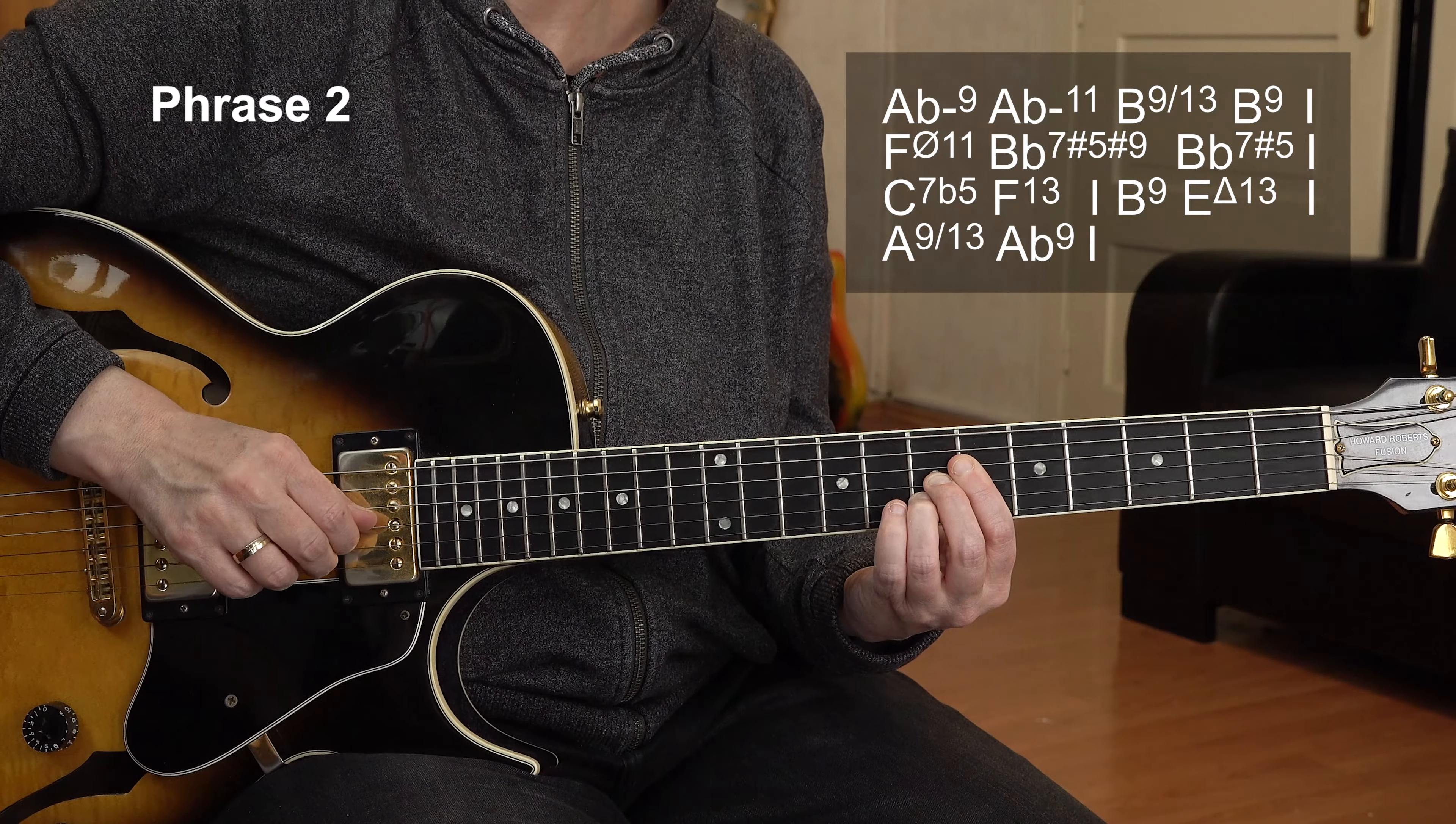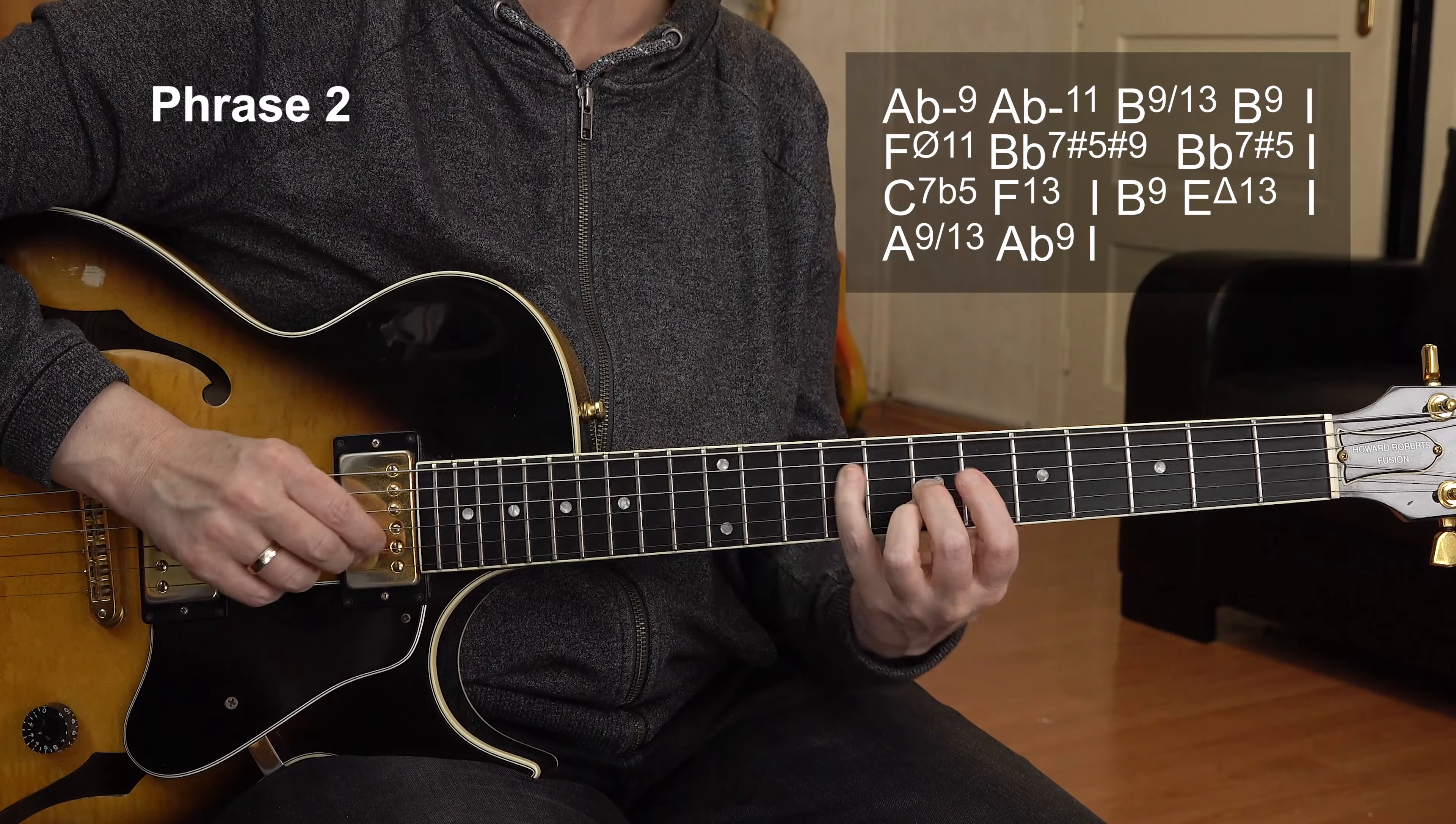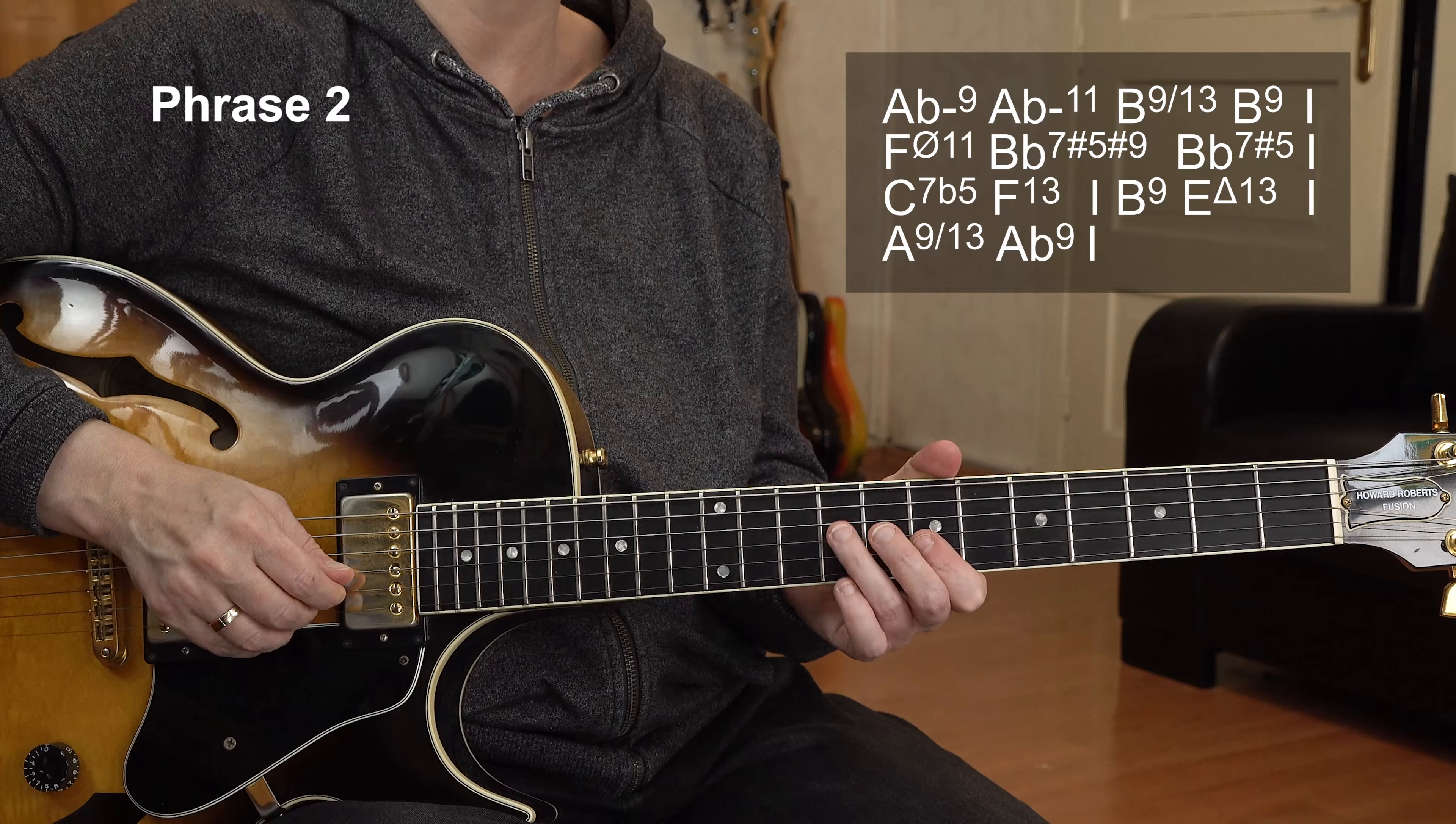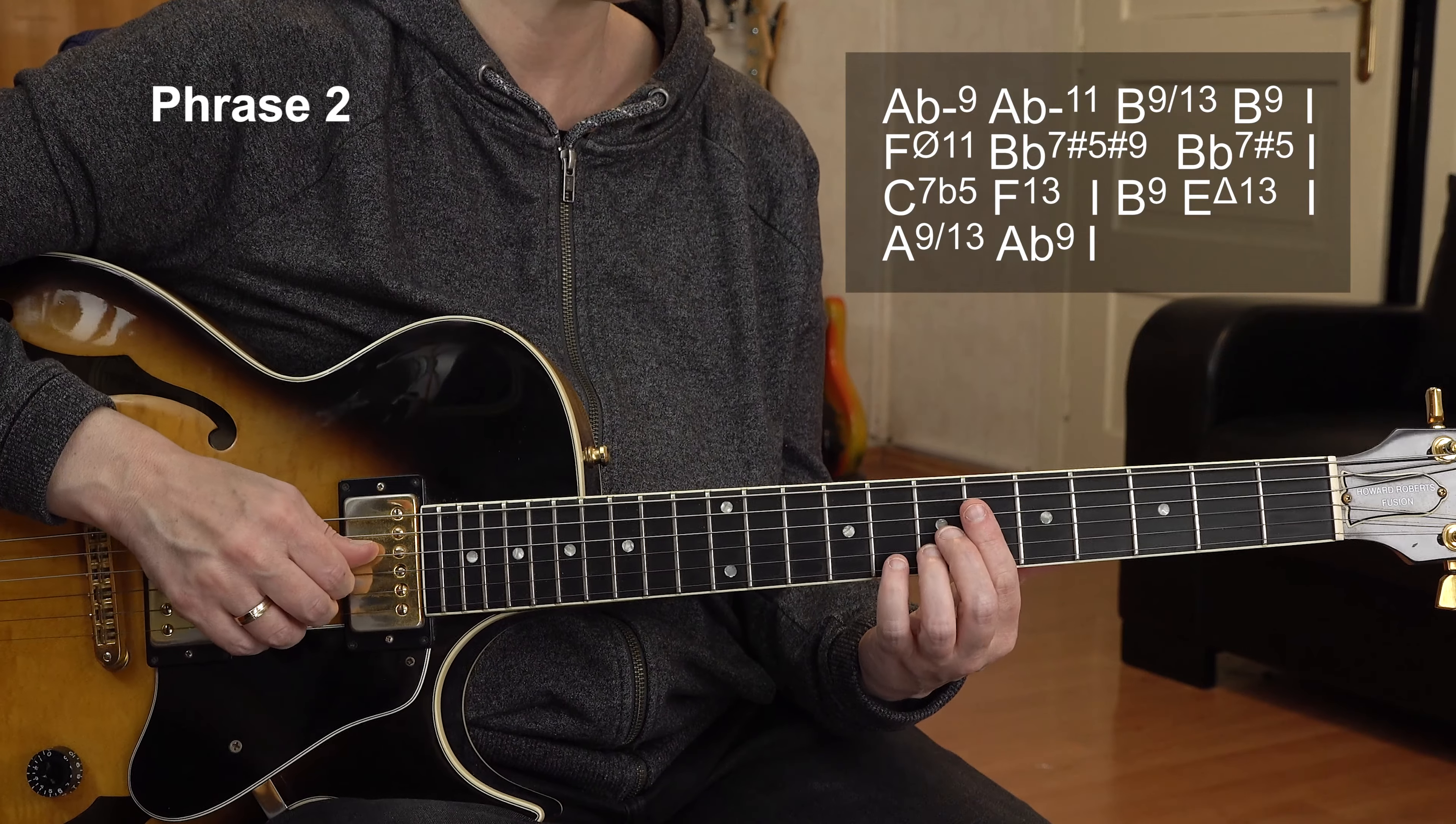And now we have B flat altered. That's the fifth degree. Here's the root. That's B flat 7 sharp 5 sharp 9 actually. Going to the B flat 7 sharp 5. And then I go down. That's actually a B minor triad. Coming B flat altered is the 7th degree of the B melodic minor scale. So this triad lies within that alteration sound.